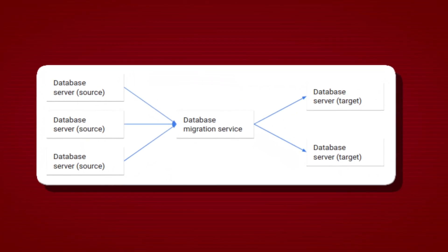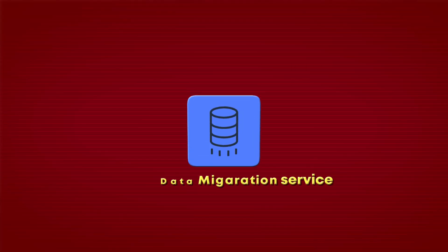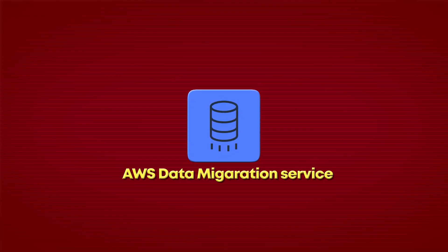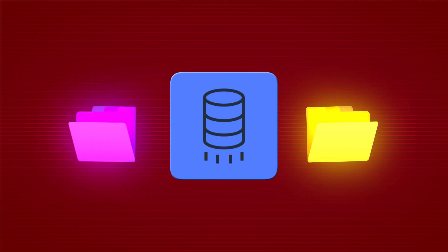In heterogeneous migration, you move from one database to another. There are two parts of data migration: one is migrating the schemas, objects, triggers, and all other things around the data, and second is migrating the actual data stored inside the tables. The tool I used for this is AWS Data Migration Service, which can easily help you replicate your data from one source to another.